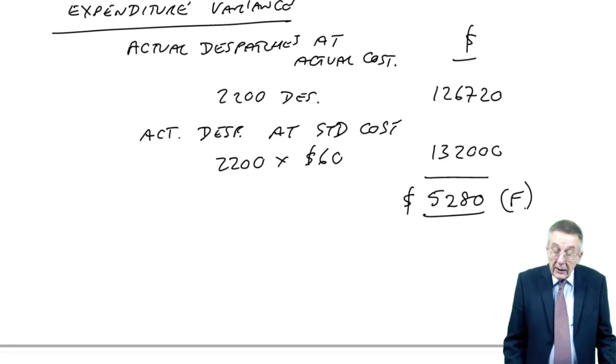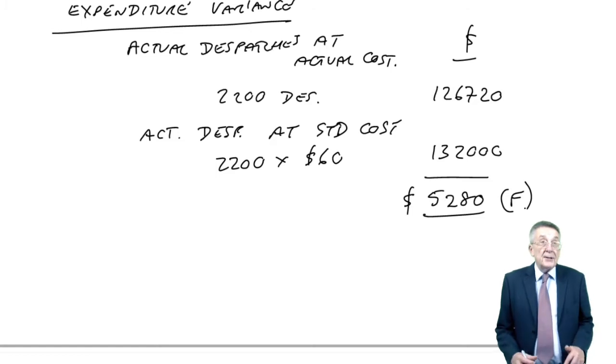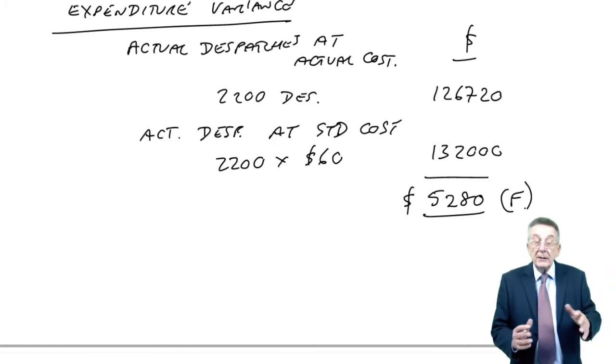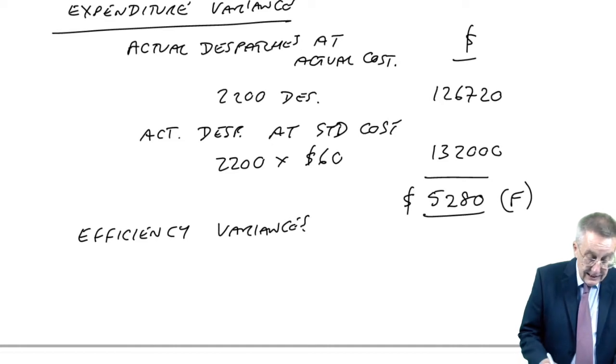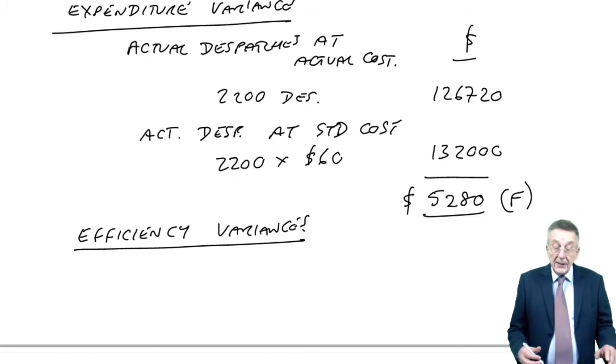We spent less than we would have expected. The cost per dispatch obviously ended up at less than 60, so we've saved 5,280. All right, so that's one reason for our total variance. The other reason, of course, is we may have had too few or too many dispatches.